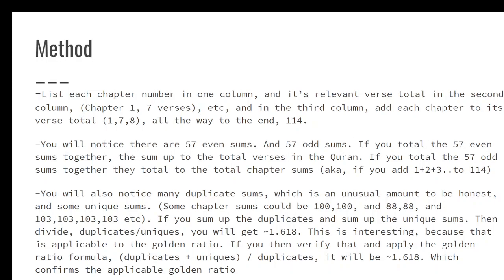Once you're done, you'll find that there are 57 even sums and 57 odd sums. If you sum up the 57 even sums, those sum up to the total verses in the entire Quran. If you total the 57 odd sums, they total up to the total chapter sums. By total chapter sums, that means you take each chapter number, so 1, 2, 3, 4, you add all of those up to 114. Why? Because this specifies that this is how many chapters have been preserved. So, 114 chapters sum up to this number. Total verses sum up to that number. And we have these two coincidences already. Well, actually three right there.